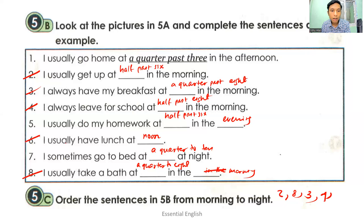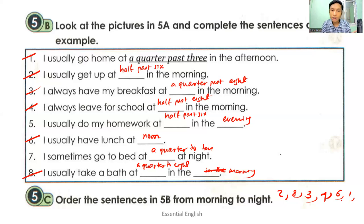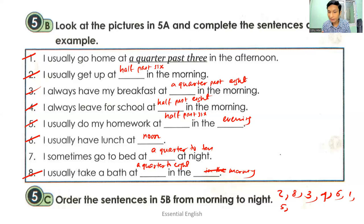Next: I usually have lunch at noon — write number six. After lunch and studying lessons, it's time to go home: I usually go home at a quarter past three in the afternoon — number one. Then number five: I usually do my homework at half past six in the evening. Finally, number seven: I usually go to bed at a quarter to ten at night.